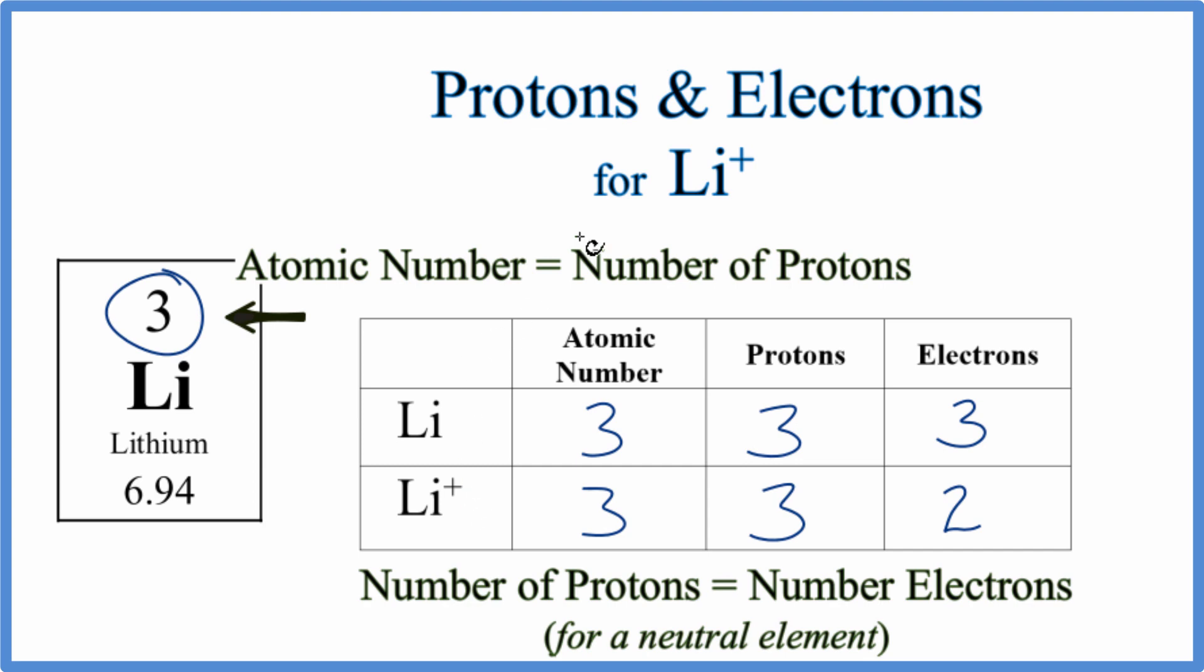That's how you find the number of protons and electrons for Li+, the lithium ion. Understand that everything is the same in terms of atomic number and protons between ions and neutral elements. It's the electrons that's different.